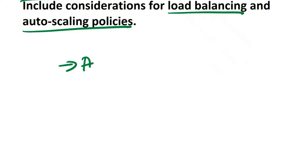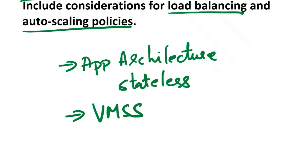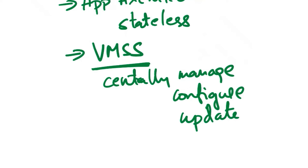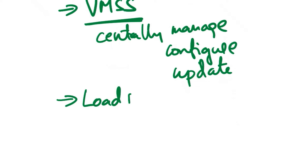First, define your application architecture. Design your application to be stateless so that new instances can be easily added or removed without impacting the overall system. Next, create a Virtual Machine Scale Set (VMSS) and deploy your application in it. VMSS allows you to centrally manage, configure, and update a large number of VMs. The next consideration is load balancing.